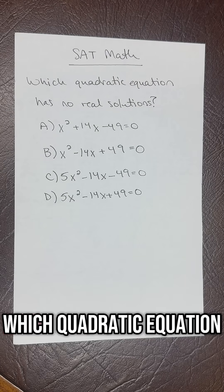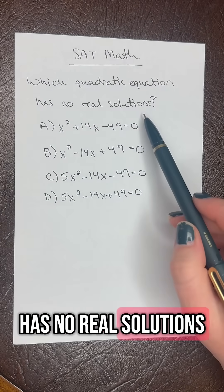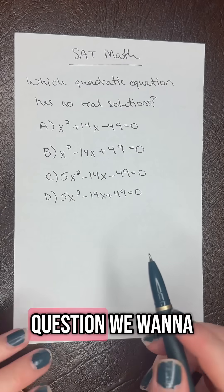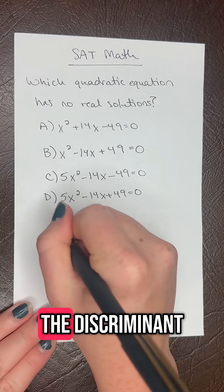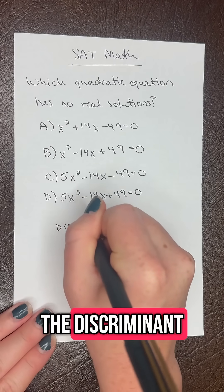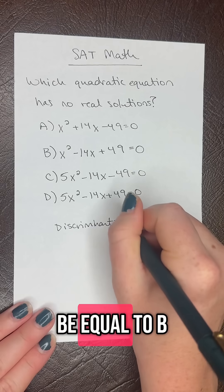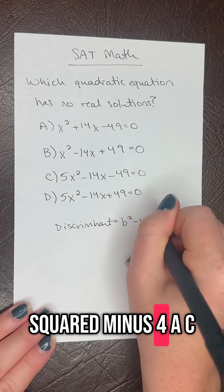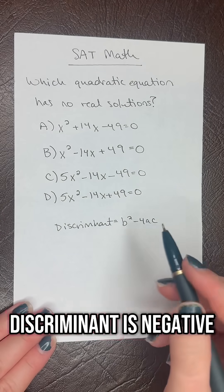SAT math question of the day: which quadratic equation has no real solutions? For this question, we want to think about the discriminant, which is equal to b squared minus 4ac.